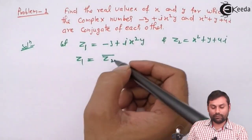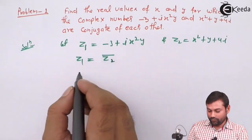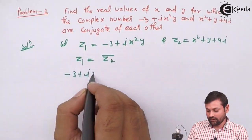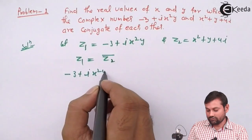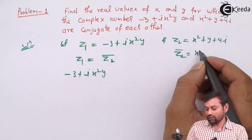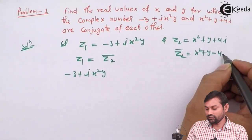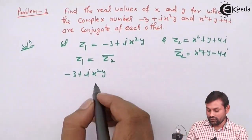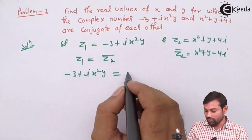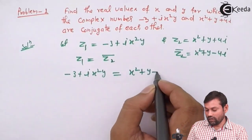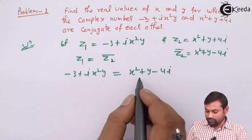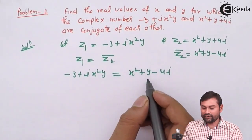अब ये यहाँ पर रखते हैं: minus 3 plus ix²y। z2 bar आप यहाँ से देख सकते हैं — क्या होगा — आपका x² plus y minus 4i। तो हमें मिलता है: minus 3 plus ix²y equals to x² plus y minus 4i।